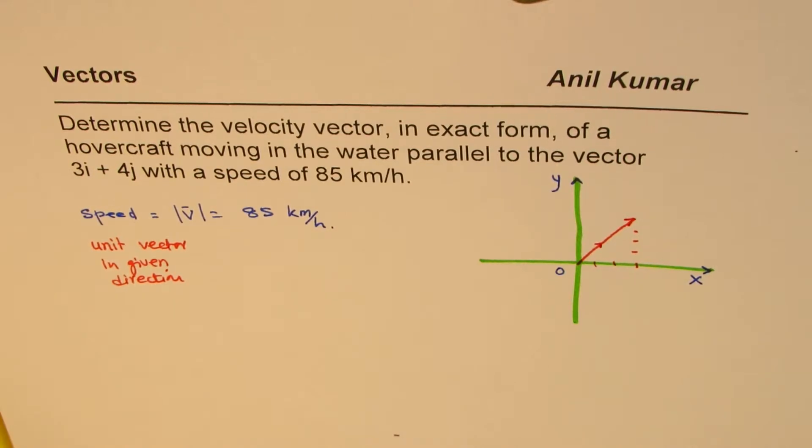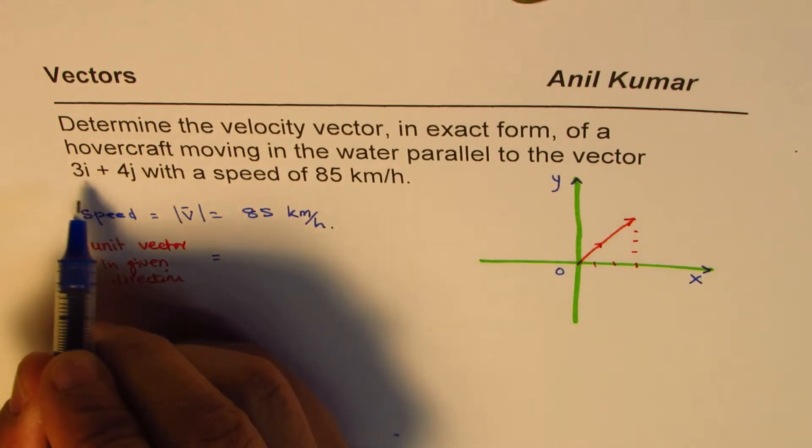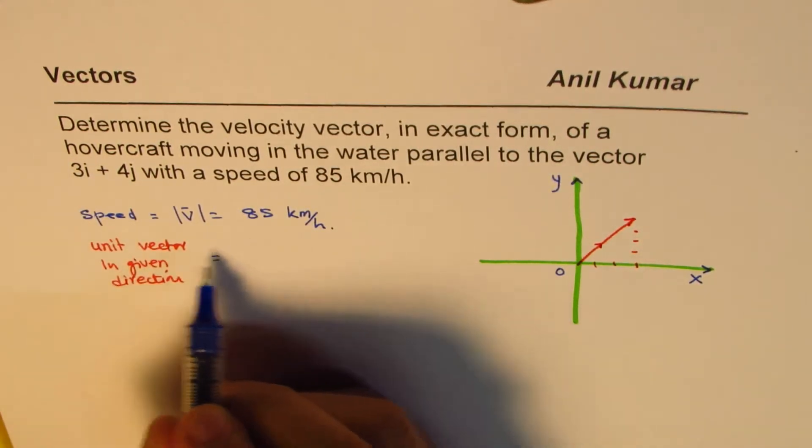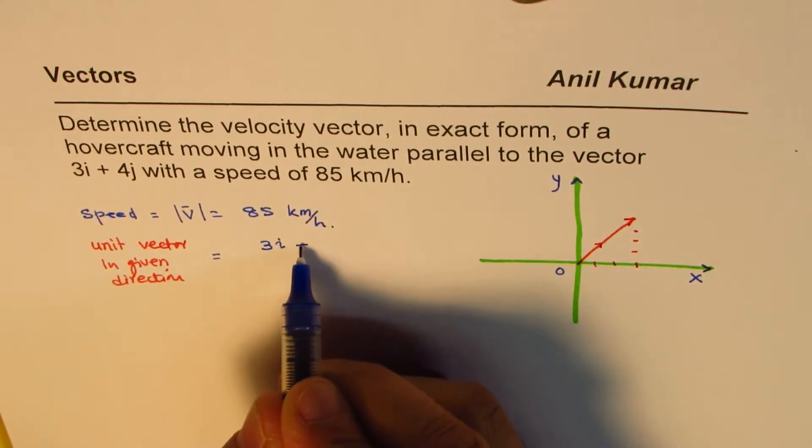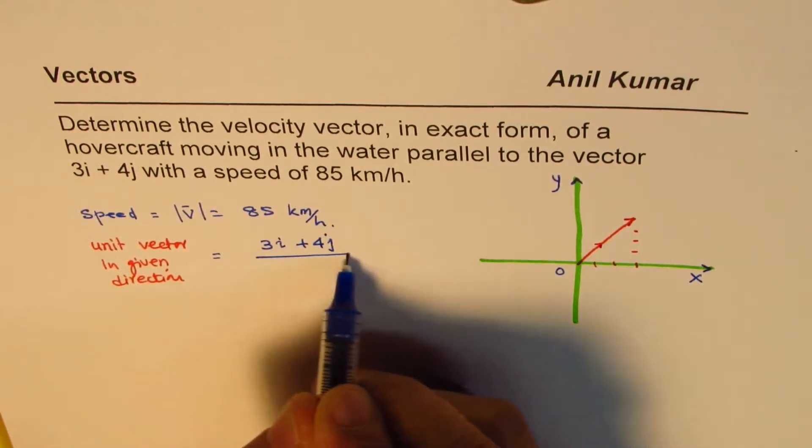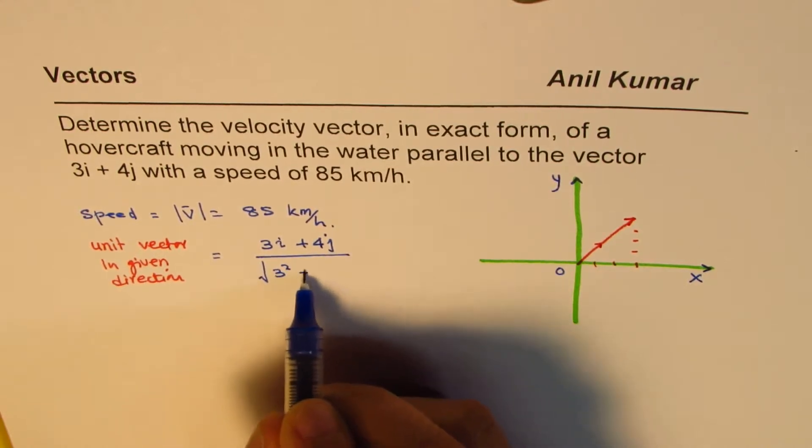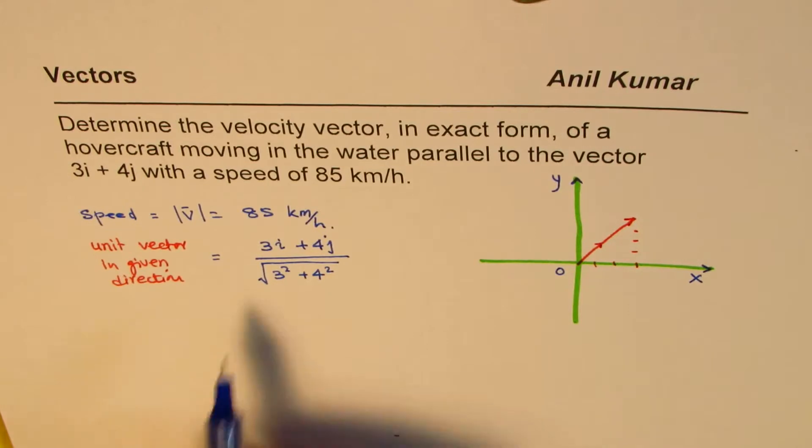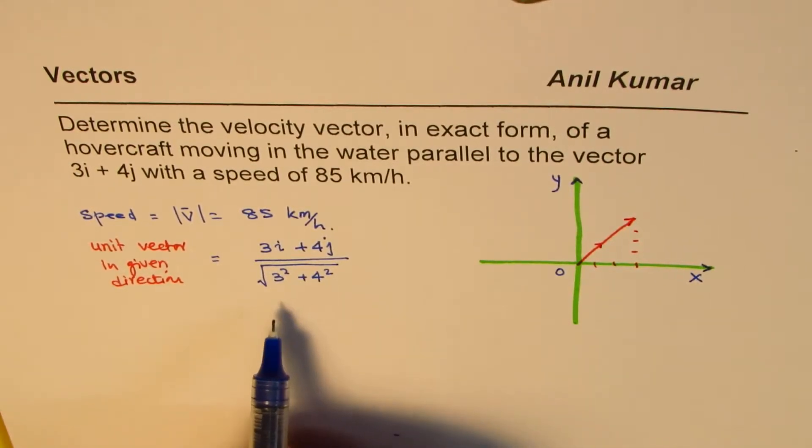So, unit vector basically is equal to the vector given. Let us call this vector as 3i plus 4j, and it is divided by its magnitude, which is square root of 3 squared plus 4 squared. So, that becomes the unit vector in this particular direction.